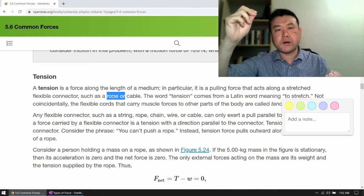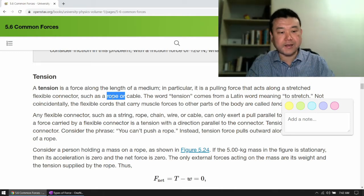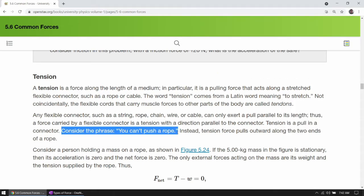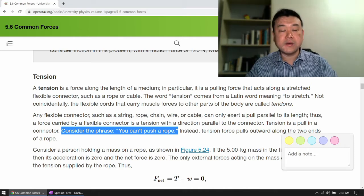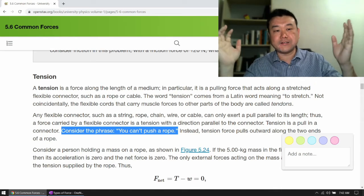Up until the point where the string is no longer taut and it goes slack, and this is what the textbook is getting at with you can't push on a rope. Tension force can work only one way. It resists the pulling, and it doesn't resist the pushing. That's the job of the normal force.